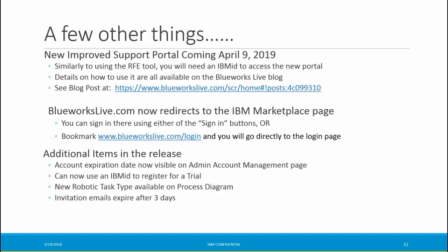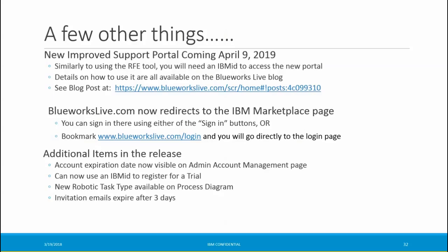A few additional minor updates: the account expiration date is now visible on your admin account management page. New trial users can now use an IBM ID to register for a trial. There's a new robotic task type available in the process diagram for robotic process automation. And invitation emails now expire after three days.